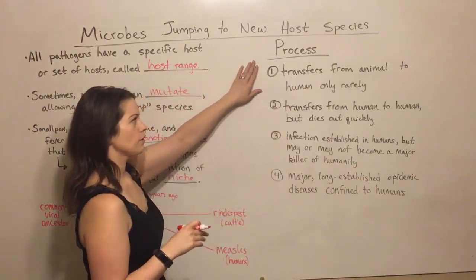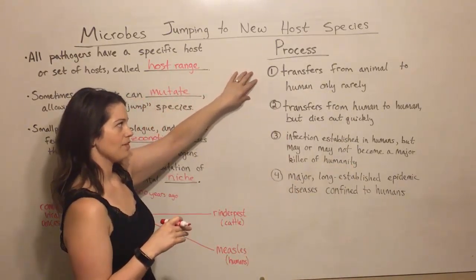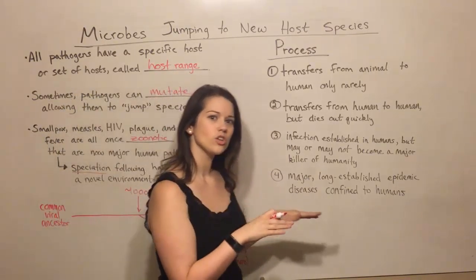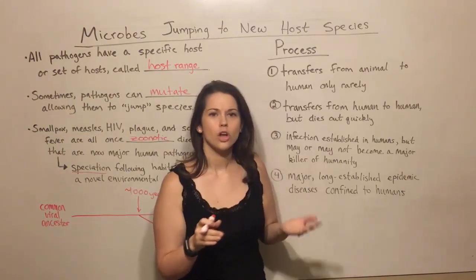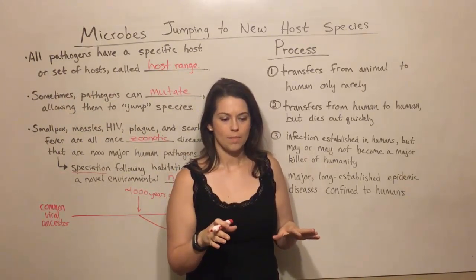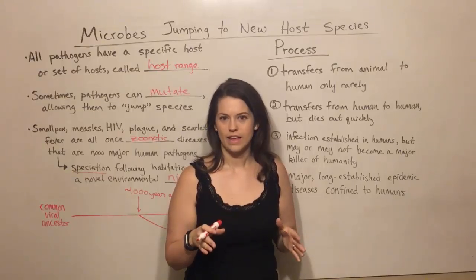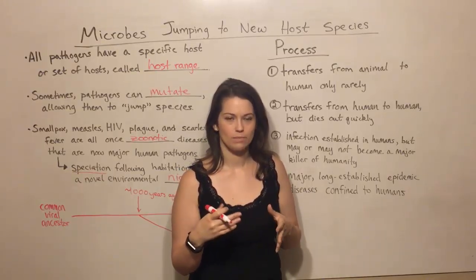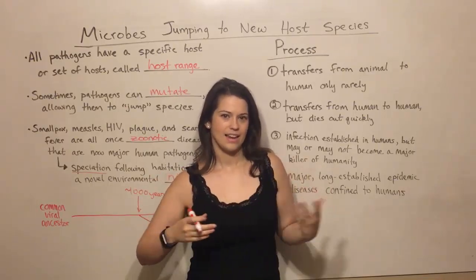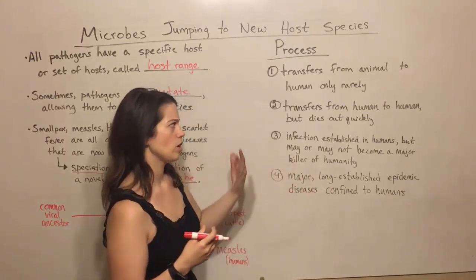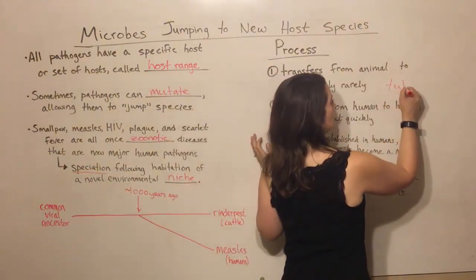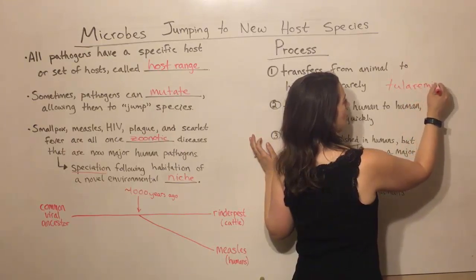The first step in that process is a pathogen that can transfer from animal to human only rarely. Sometimes a human can be infected, but there's no human-to-human spread, and even the human infection doesn't happen very often, because that pathogen is still much more adapted to its current host species and isn't doing very well in the human host. An example of this would be tularemia, also known as rabbit fever.